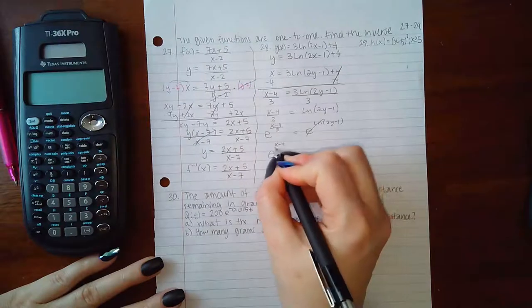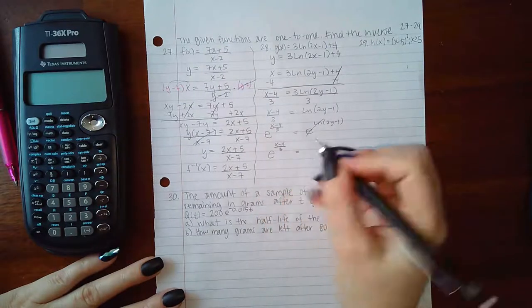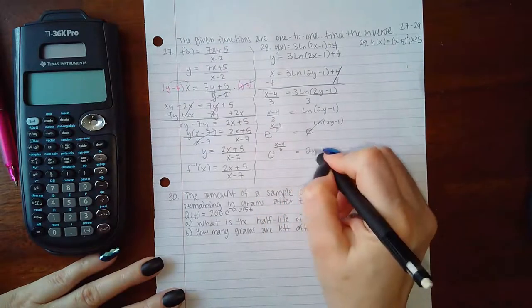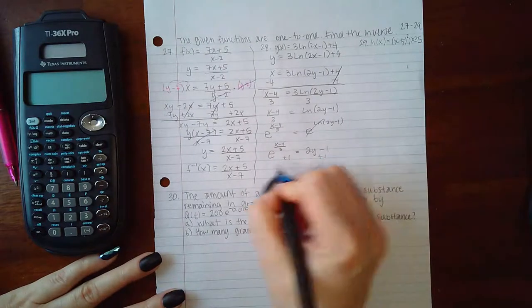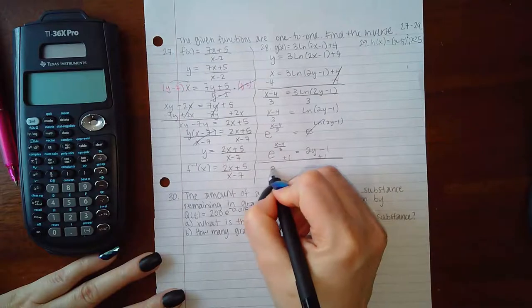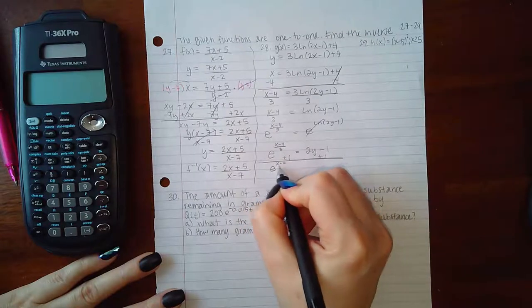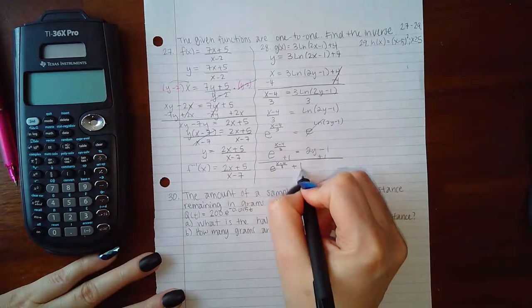Leaving me with e to the (x minus 4) over 3 equals 2y minus 1. Then I can add 1 on both sides, leaving me with e to the (x minus 4) over 3 plus 1 on this side equals 2y.